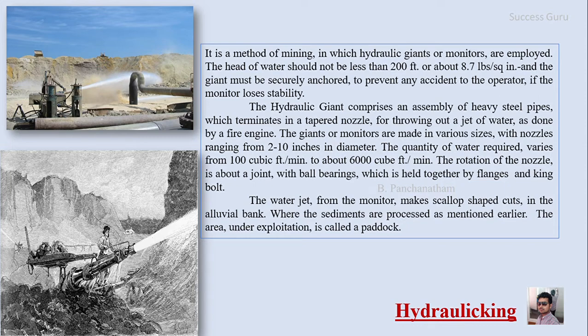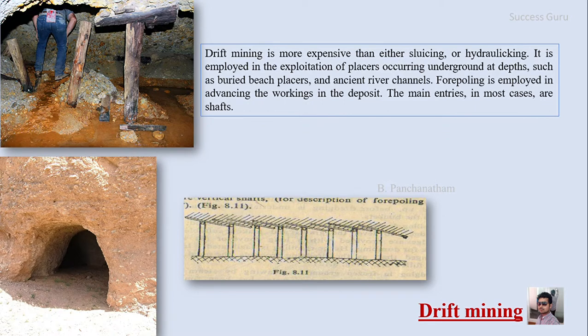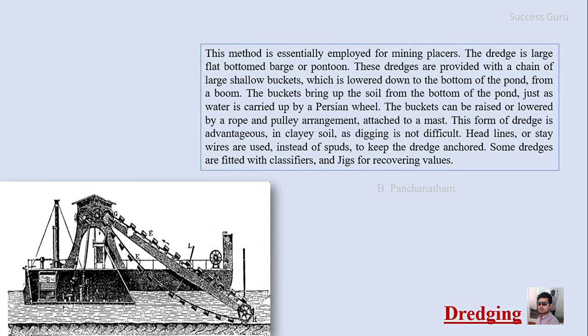The next method is drift mining, which is more expensive than either sluicing or hydraulicking. It is employed in the exploitation of alluvial deposits occurring underground at depth, such as buried beach placers and ancient river channels. Cooling is used in advancing the workings in the deposit. The main entry in most cases is via shafts. This support method is called fore-poling, used for mine stability, and workers must enter the mine site to recover material by hand — a process called stoping.